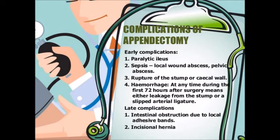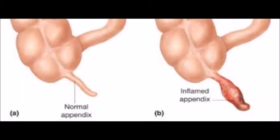The Ochsner-Sherren regime is used for appendicular mass management: A for aspiration if needed, B for bowel rest, C for monitoring temperature, pulse, and respiration, D for drugs covering all organisms including gram-positive and gram-negative, E — exploratory laparotomy should not be done, and F for fluids; the patient is kept nil orally for a few days.